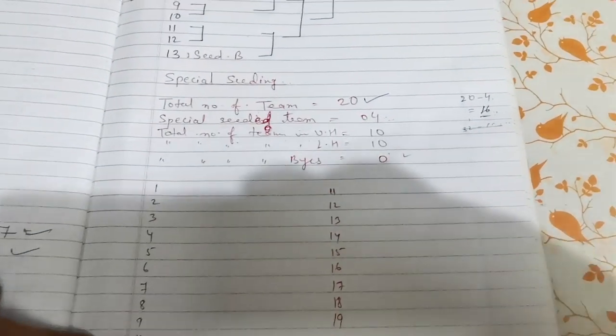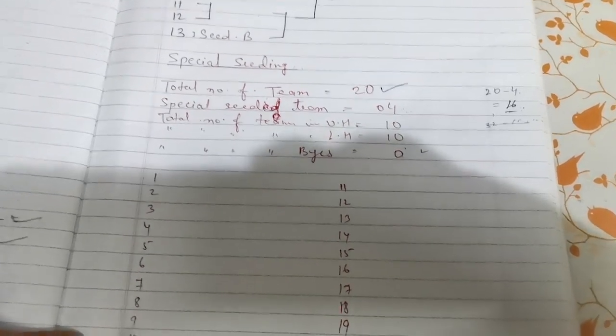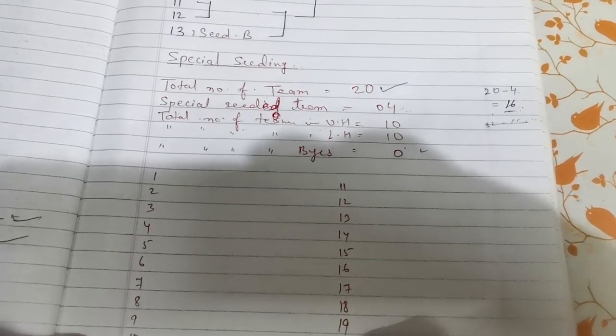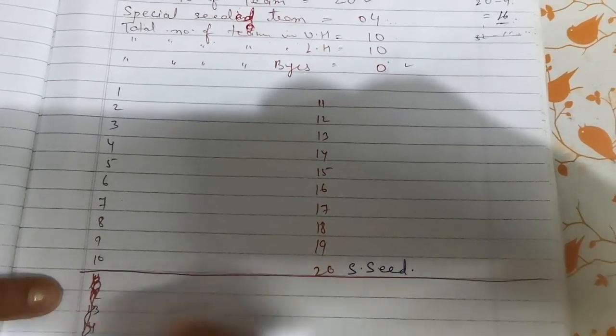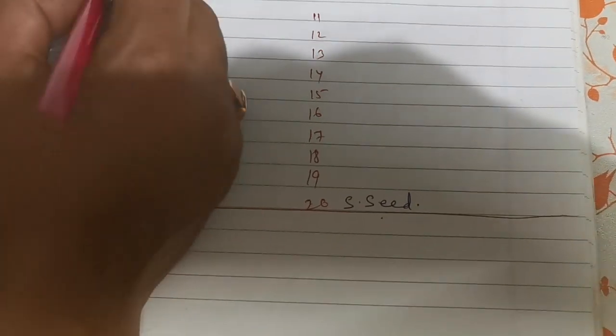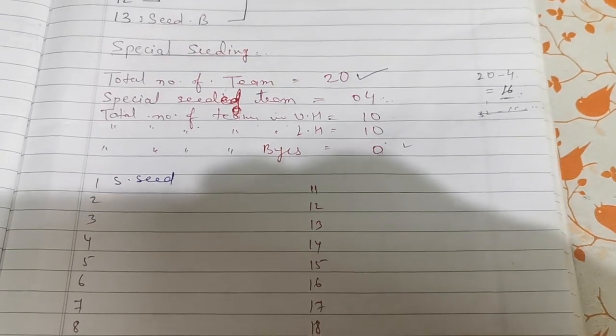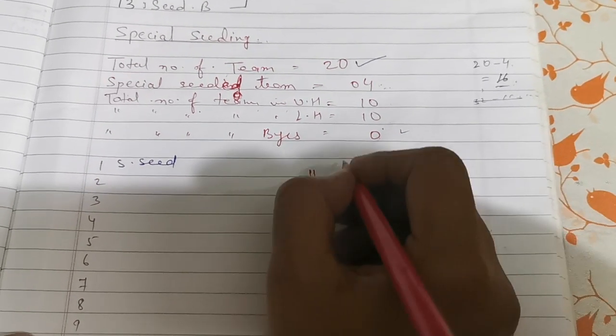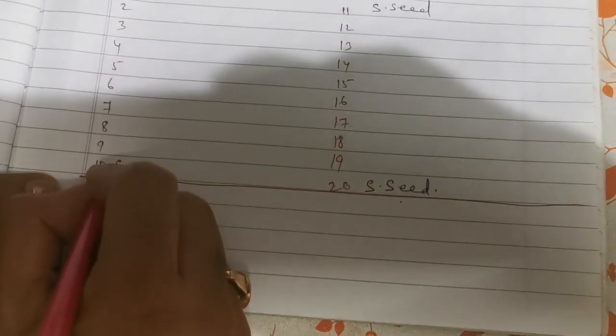So here total number of bye is 0. Now we will put the special seeding team. We will put the special seeded team here: first last team of lower half, then first team of upper half, then first team of lower half, and the last team of upper half.